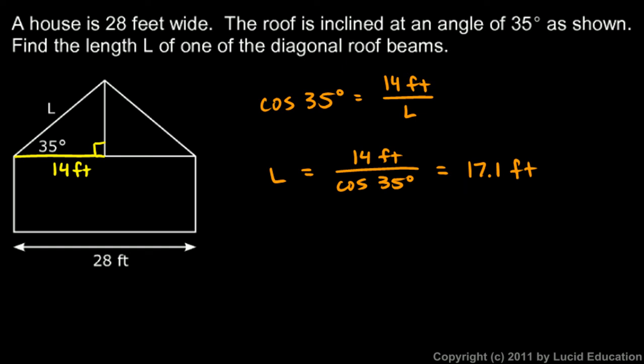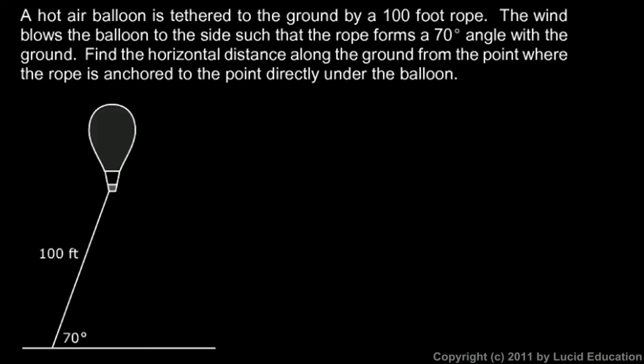Here we have a hot air balloon. This is the balloon here and these are just some ropes holding up the basket down there. We're told that it's tethered to the ground by a 100-foot rope, so that's the rope 100 feet long fastened into the ground at the bottom. The wind blows the balloon to the side. The balloon is lifted by a buoyant force because of the hot air inside it, so if there were no wind this rope would just be vertical, but the wind is blowing it to the side a bit.